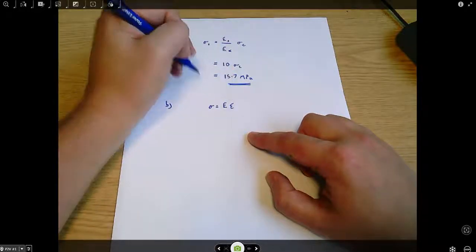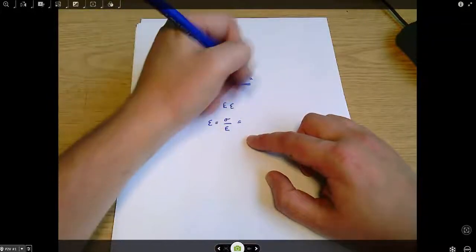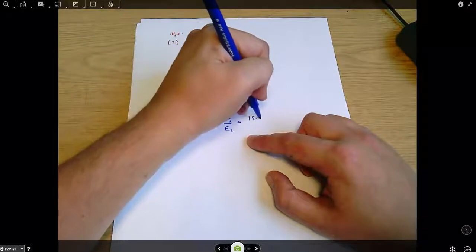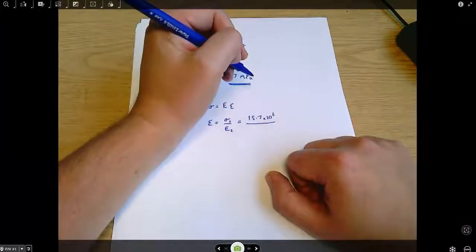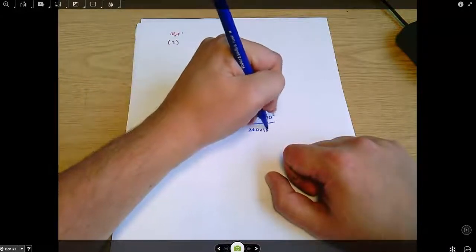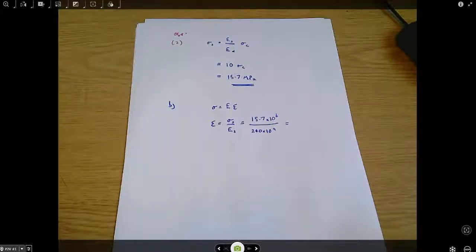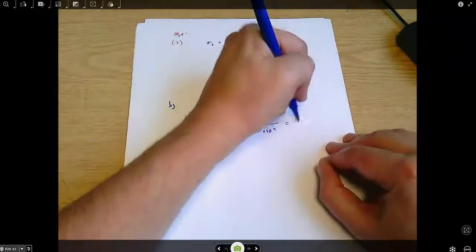Sigma equals E epsilon. Stress is Young's modulus times strain. So therefore strain equals sigma over E, which here, remembering that I'm using the steel for both, is 15.7 times 10 to the 6 divided by the Young's modulus for steel, which is 200 times 10 to the 9, which comes out as 7.874 times 10 to the minus 5.